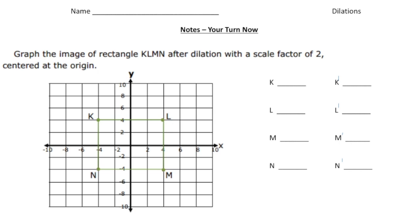Welcome back — let's see how you did with this dilation problem. Here we have a rectangle K, L, M, and N, and you had to redraw it with a dilation with a scale factor of 2. First step: let's list the points of the original. Point K is at (-4, 4). Point L is at (4, 4). Point M is at (4, -4). And point N is at (-4, -4).